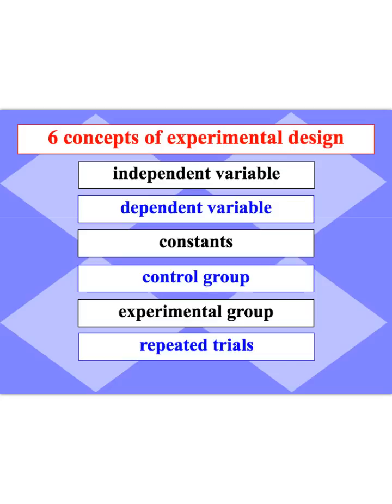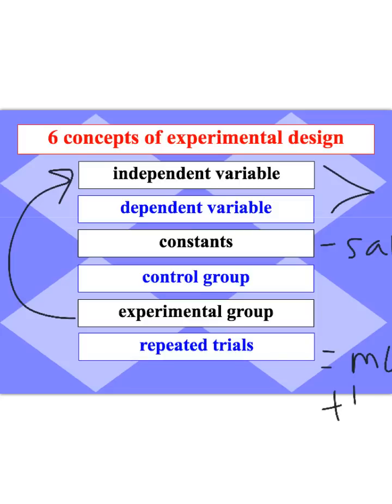Our independent variable and our dependent variable are our big things when we're designing an experiment. These are the two things that are both able to change. Constants are going to be our things that stay the same and never change. Our control group will be our normal or comparison group. Our experimental group will be the ones that are receiving the independent variable. And our repeated trials are just the fact that we are going to repeat the experiment more than once.